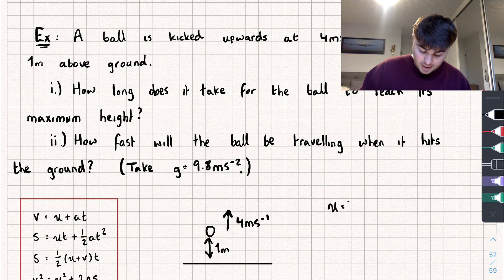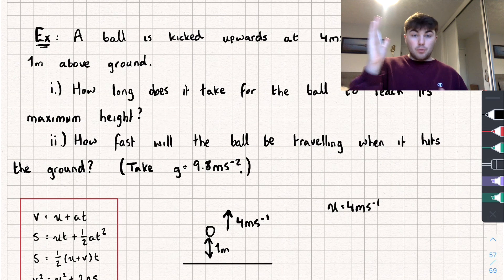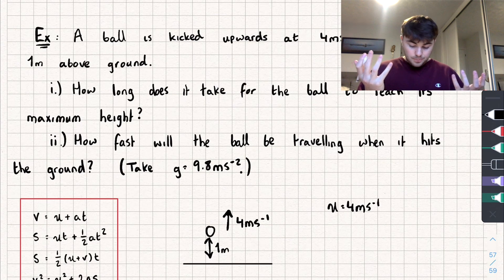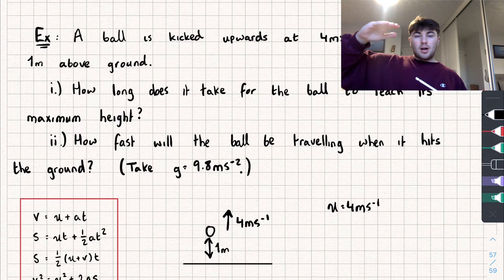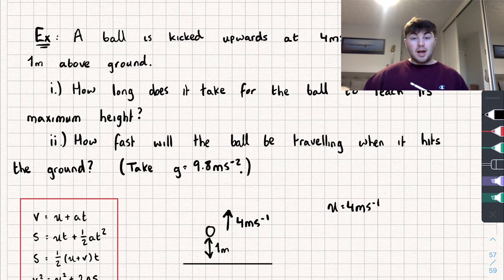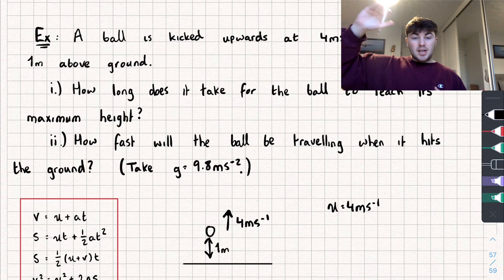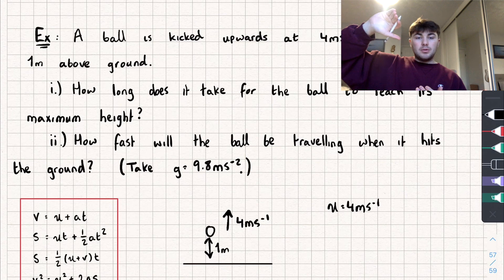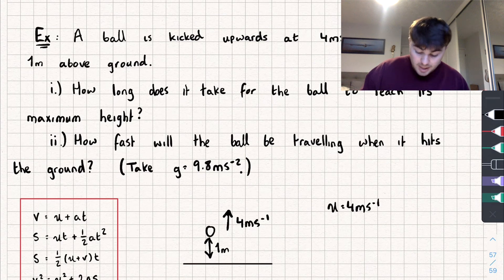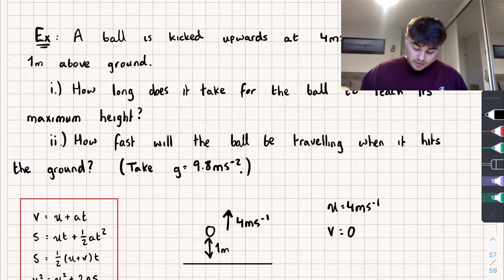Because the ball is kicked upwards, I'm going to take the upwards direction to be positive, so the initial velocity u = +4 m/s. When you throw something up it slows down, stops, then comes back down. At the point of maximum height, the velocity is zero because it's changing from going up to coming back down — so v = 0 at maximum height.